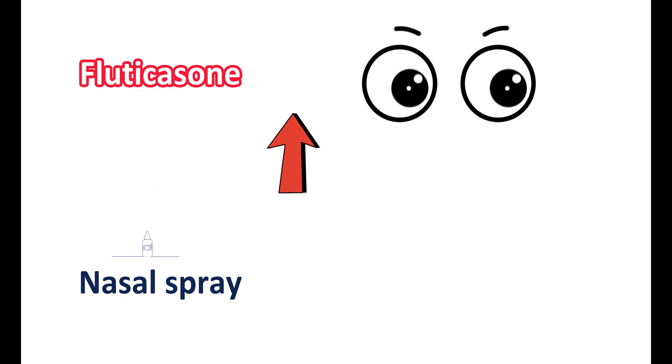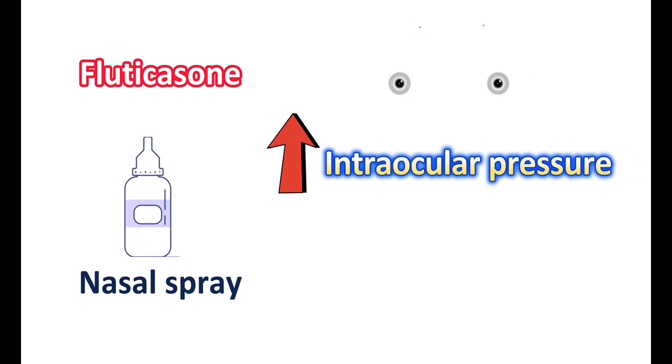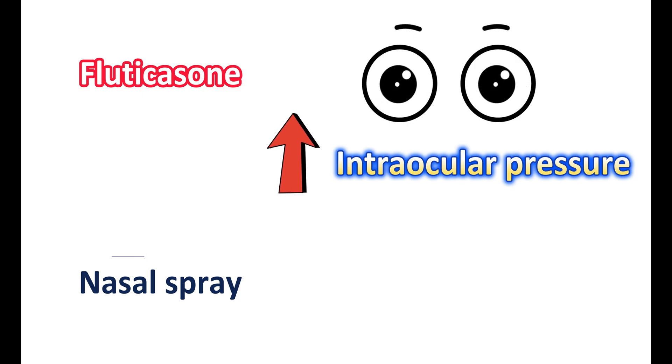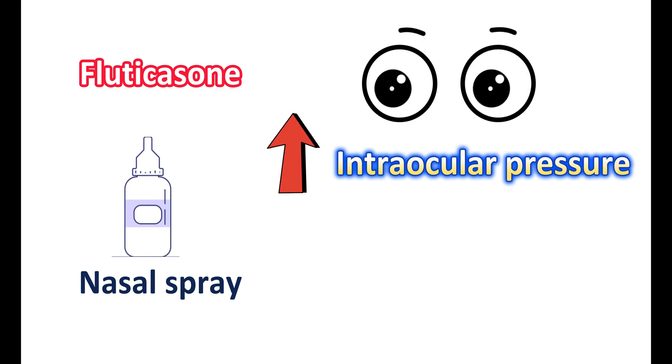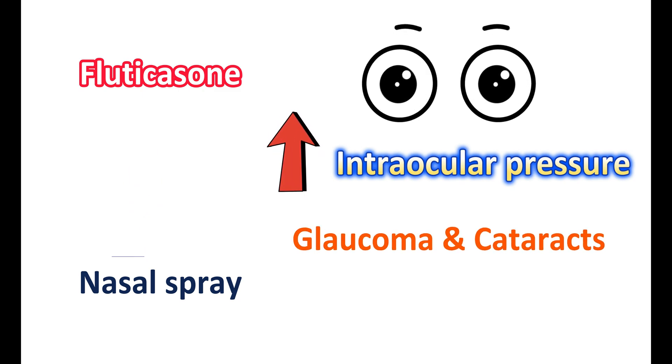When you are going to apply fluticasone as a nasal spray, a small amount of the medication can enter into your body. This can be sufficient to produce adverse effects on your eye. Normally, corticosteroids can increase the intraocular pressure. Similarly, fluticasone nasal spray can increase the risk of glaucoma and cataracts in people.